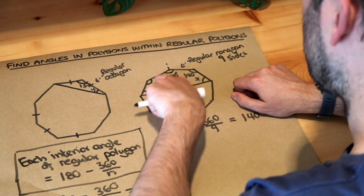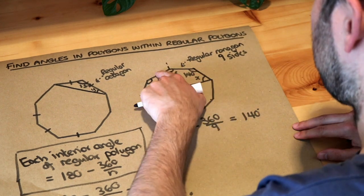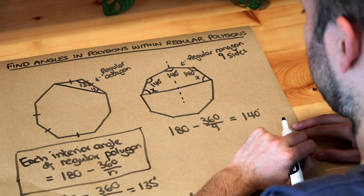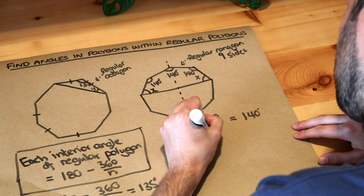It's not regular, but we know the sum of the angles in this polygon. Well it's one, two, three, four, five sides, it's a pentagon as we said earlier. How do we find the total interior angle inside a shape?